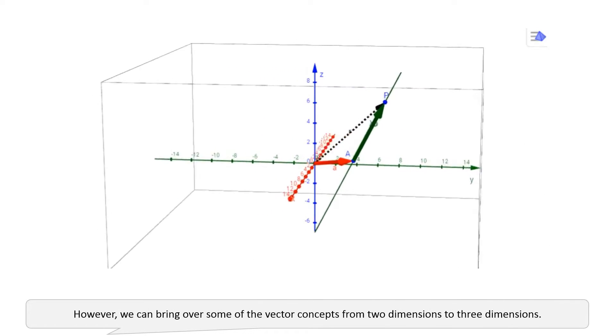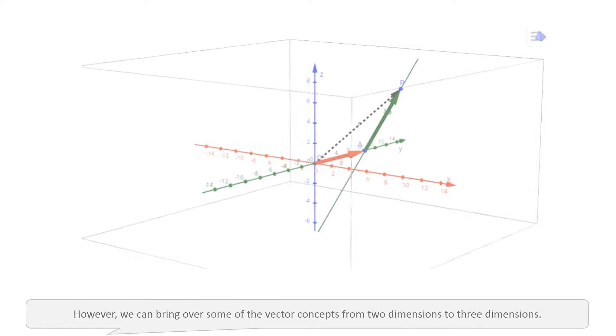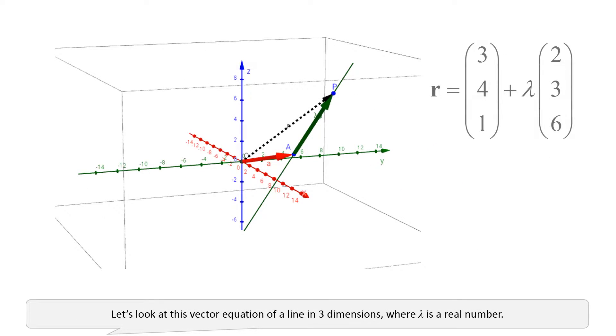However, we can bring over some of the vector concepts from two dimensions to three dimensions. Let's look at this vector equation of a line in three dimensions, where lambda is a real number.